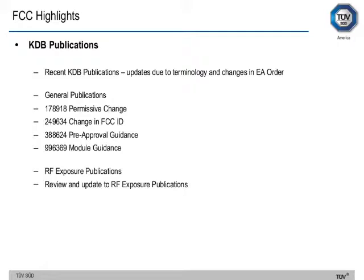Some KDB publications have also been updated due to terminology changes in the equipment authorization order. These include some general publications such as the permissive change policy, which now has significantly more detail, a KDB on change in FCC ID, and the pre-approval guidance KDB, which replaces the permit but ask KDB. The terminology has changed from permit but ask to pre-approval guidance. There is also a module guidance KDB 996369 which has been updated, and an RF exposure review with updates to various publications.